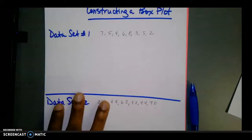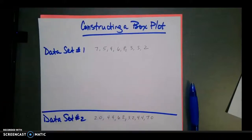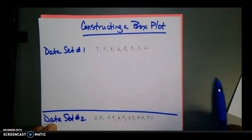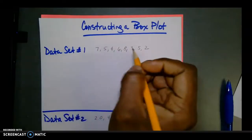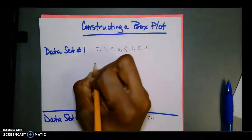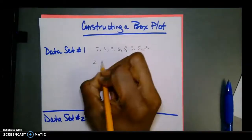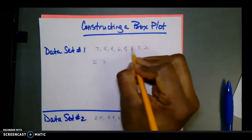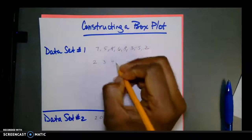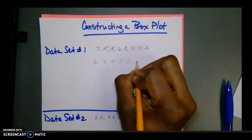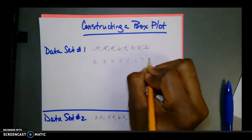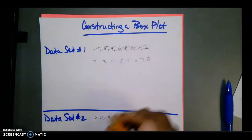So if I switch over to my work here, we're going to look at constructing a box plot for this particular data set. When dealing with any data set, you want to put those values in order. For data set number one, I'm going to put them in sequential order from least to greatest. We have: two, three, four, five, five, six, seven, and eight.